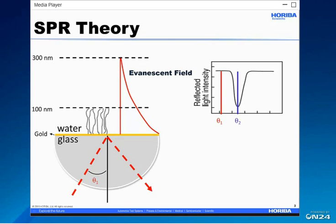Surface Plasma Resonance is a powerful technique to measure biomolecular interactions in real time in a label-free environment. At a given angle, the excitation of surface plasma takes place, resulting in reduced intensity of the reflected light due to the resonance energy transfer between the evanescent wave and surface plasma. The photons are then converted to plasma, causing a dip in the reflected light intensity. The angle theta 2 at which resonance occurs is extremely sensitive to any change in the refractive index of the medium adjacent to the metal surface, and such changes can be monitored by recording the intensity of the reflected light when the system goes out of resonance.